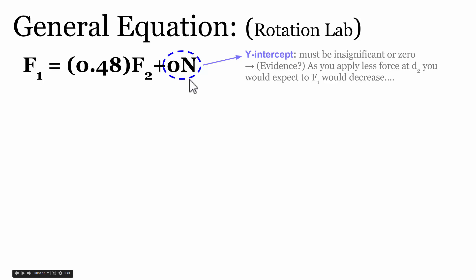In our discussion, we reasoned that the y-intercept must be insignificant or zero. What was the evidence? We said as you apply less and less force with a spring scale at that second distance, you would expect that force 1 would not need to be quite so big at 1 meter in order to rotationally balance it. As the force you apply approaches zero, we would expect that the force needed to keep it from rotating would also approach zero simultaneously.